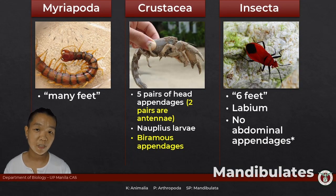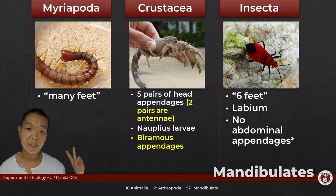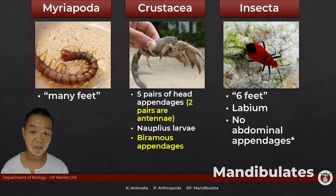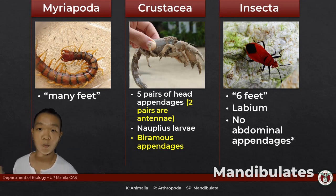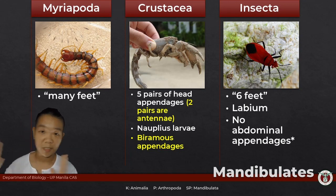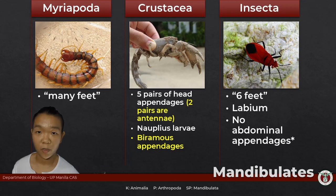What distinguishes insects from the other mandibulates that we discuss is the fact that they have six walking legs, they have a labium — which we will get to later — and they typically don't have any abdominal appendages.